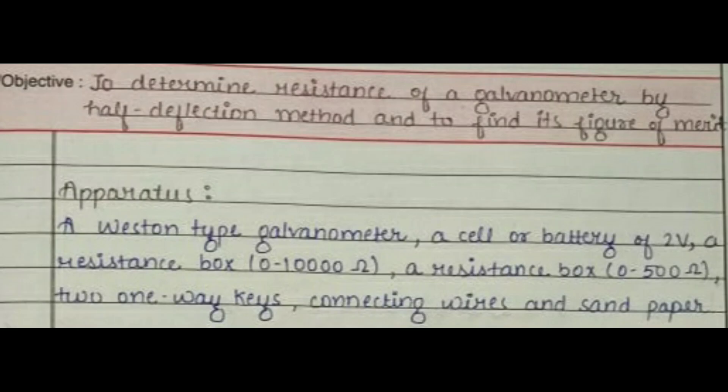The aim of this practical is to determine the resistance of a galvanometer by half deflection method and to find its figure of merit. For this you will require a western type galvanometer, a cell or battery of 2 volts, a resistance box of 0 to 10,000 ohms, and a second resistance box of 0 to 500 ohms, two one-way keys, connecting wires, and sandpaper.